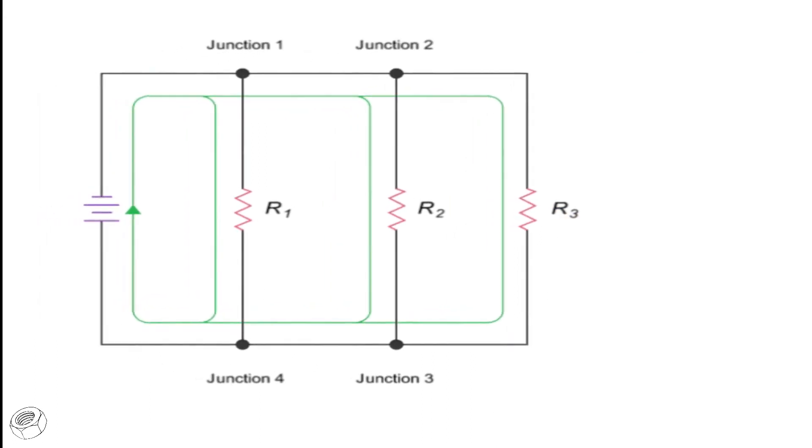The current along each branch will vary, but when added together, these various branch currents will equal the current at the source. For example, look at these ammeter readings at the various branches and junctions of a parallel circuit with a source current of 10 amps.